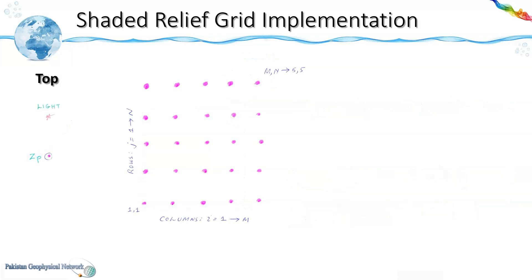Similarly if the light source is located directly at the top and this is the zp then its reference node zr would be located here. And they would be represented by i,j for zp and i, j plus 1 for zr.